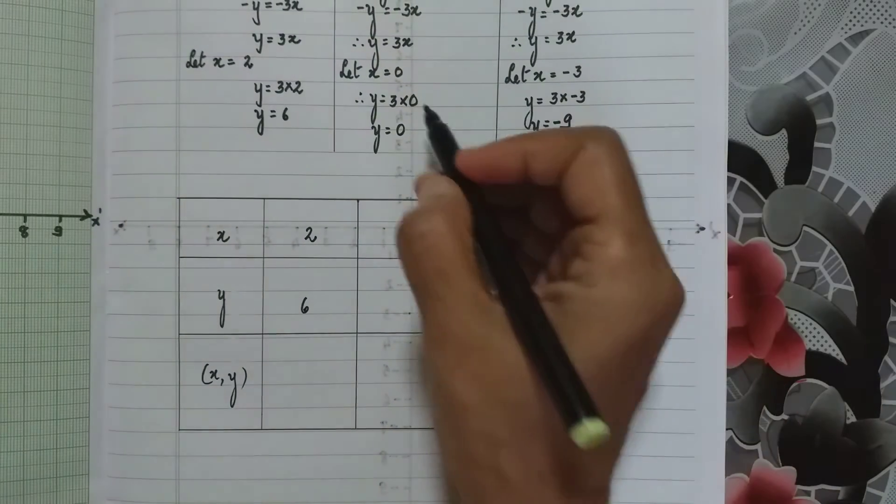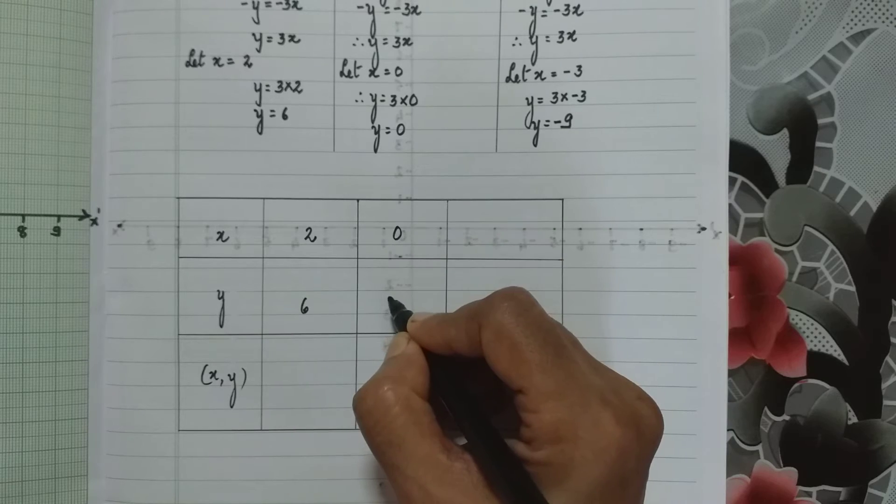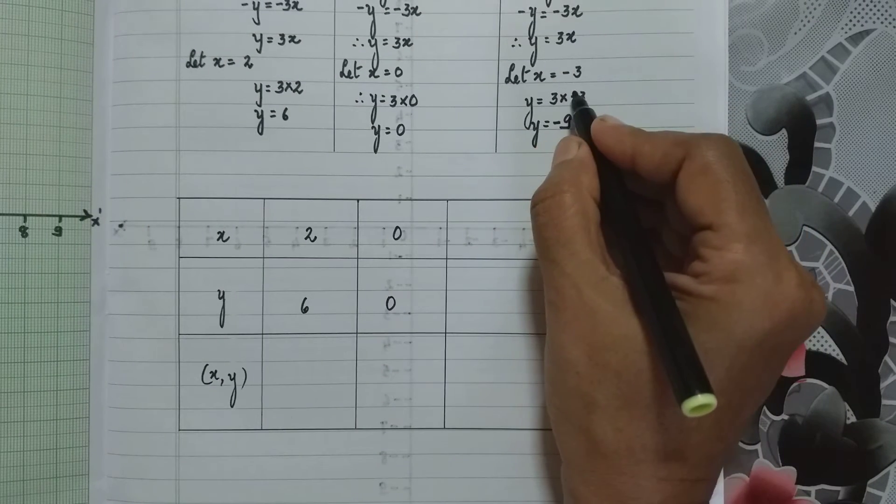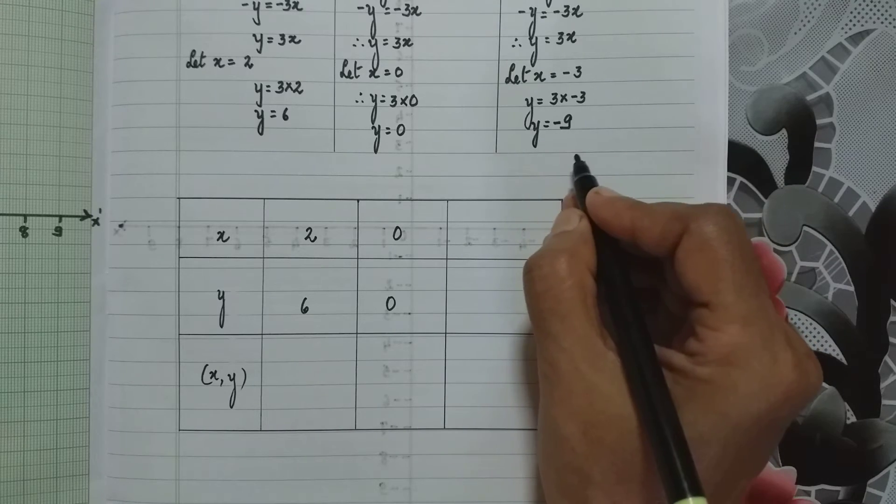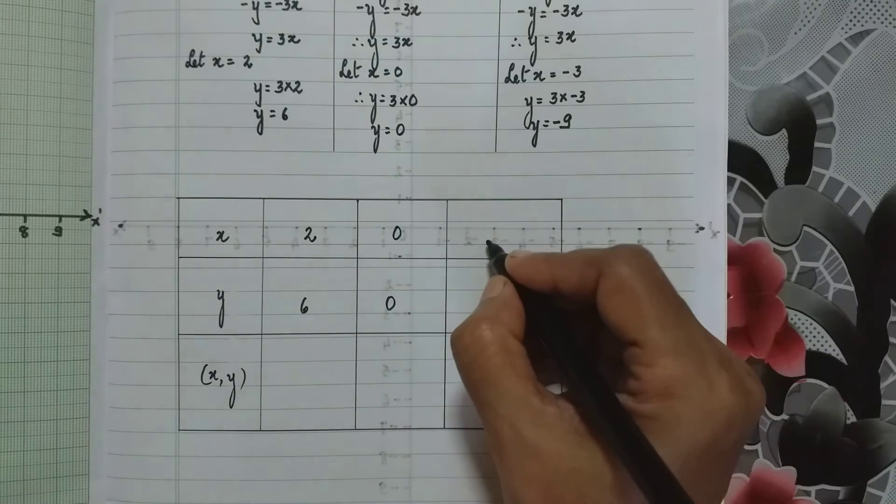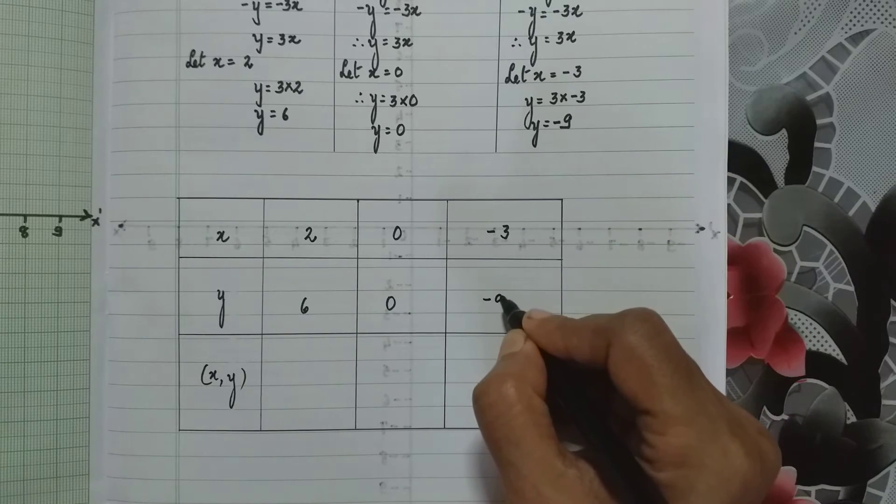Here when the x value is 0, y value is also 0. Here when the x value is minus 3, the y value is minus 9. So I write here minus 3 and minus 9.